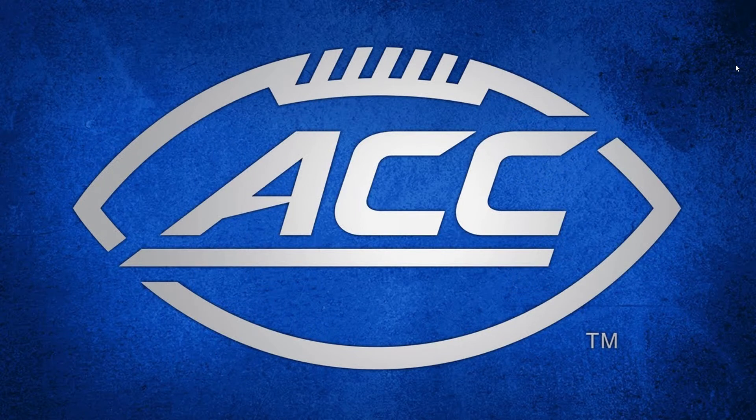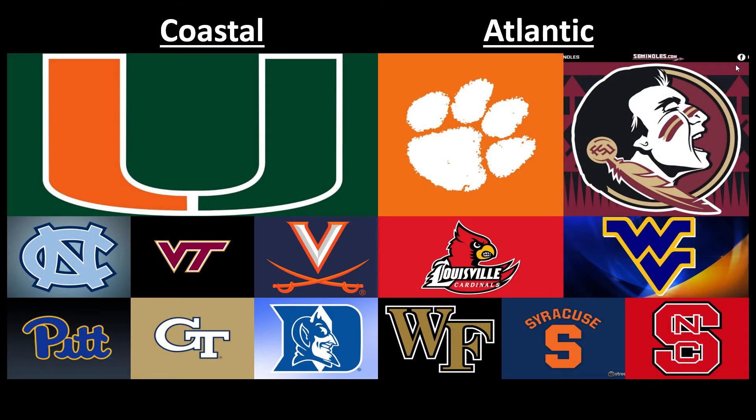The ACC — some of these are based on geography. For the ACC Coastal division: Miami, North Carolina, Virginia Tech, Virginia, Duke, Georgia Tech, and Pitt, per usual. However in the Atlantic, I actually added West Virginia and took Boston College out — it just made no sense to me why West Virginia was in the Big 12, completely out of the way. I have them in the ACC Atlantic division along with Clemson and Florida State.